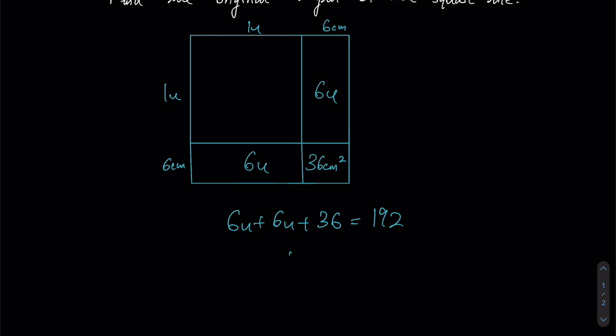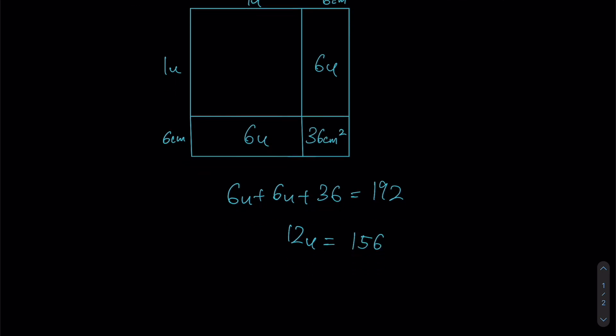So 2 times 6 units, that gives us 12 units. And by subtracting 36 from 192, we would have 156. So if 12 units constitutes 156, all we need to do to find one unit is to divide by 12. And you will realize after dividing that this gives us 13 centimeters.